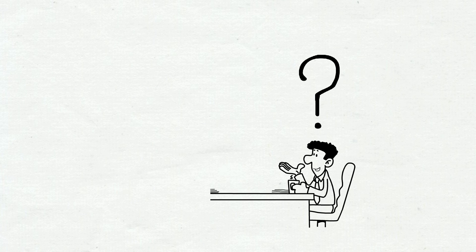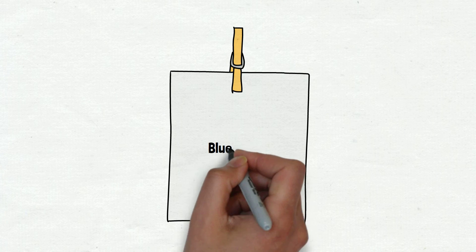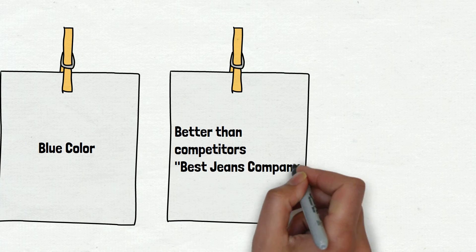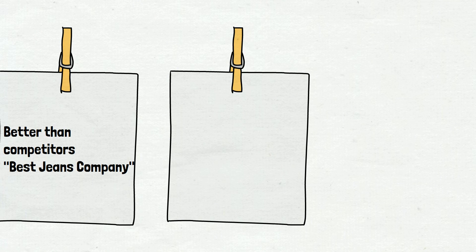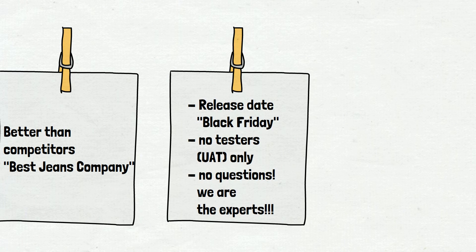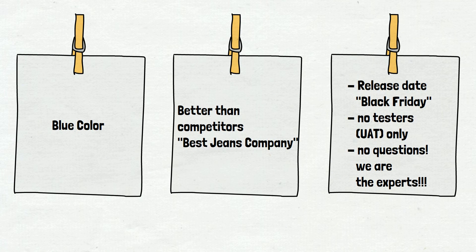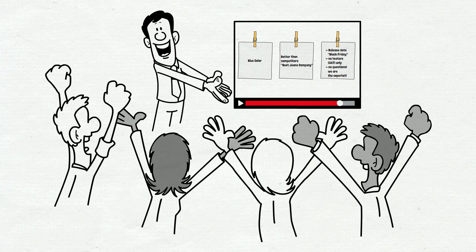The manager is confused but decides to start work on the project. He writes down the requirements on a couple of cards: the color is blue, the website should be better than Best Jeans Company, release date is Black Friday, no testers, user acceptance testing only, and no more questions — only answers, because we are the experts. Requirements are very poor, but the manager presents them to the team and developers are very happy — there are no testers, so no bugs will be found. And the work begins.